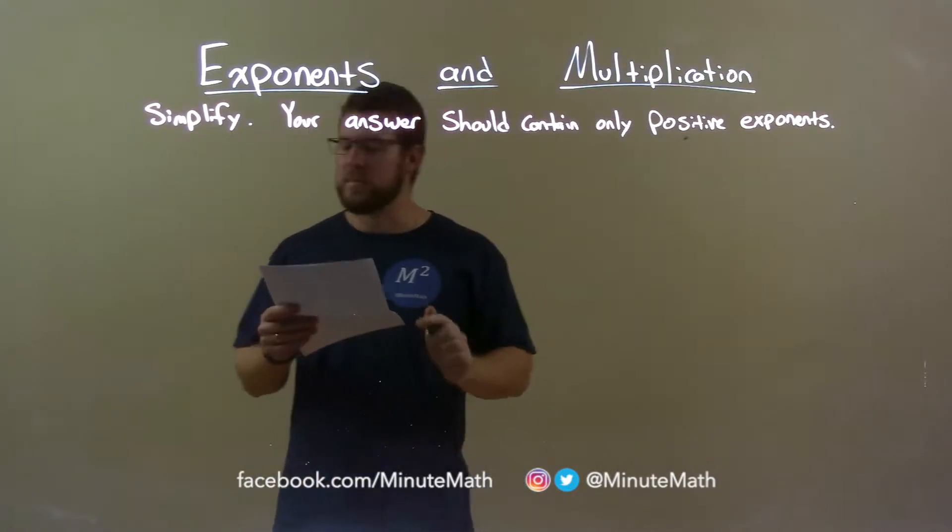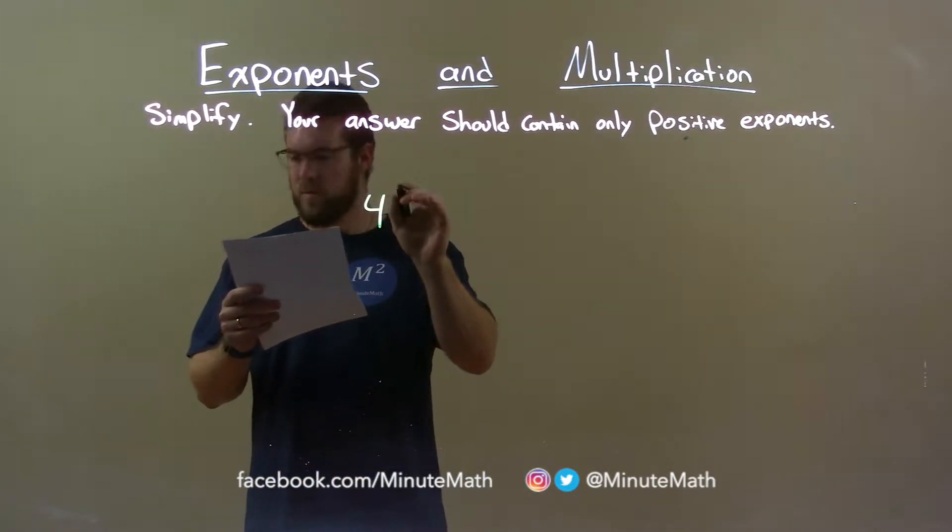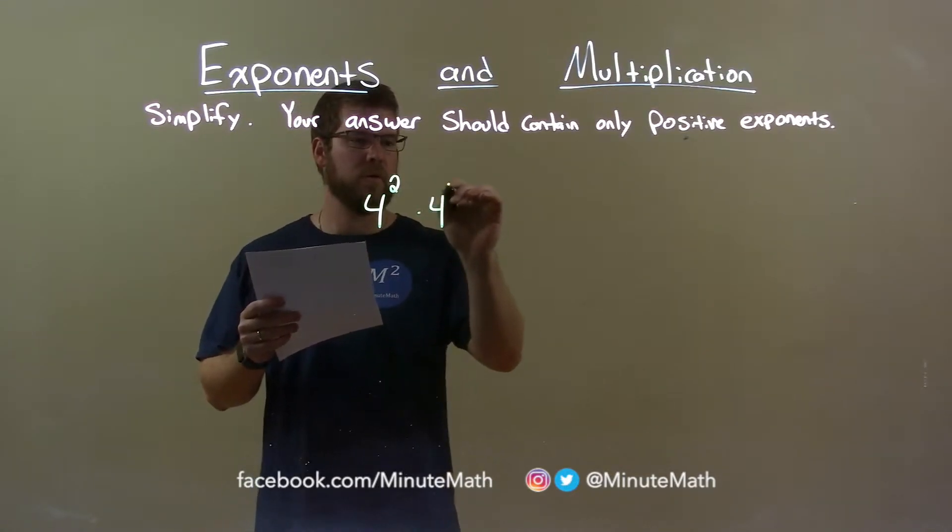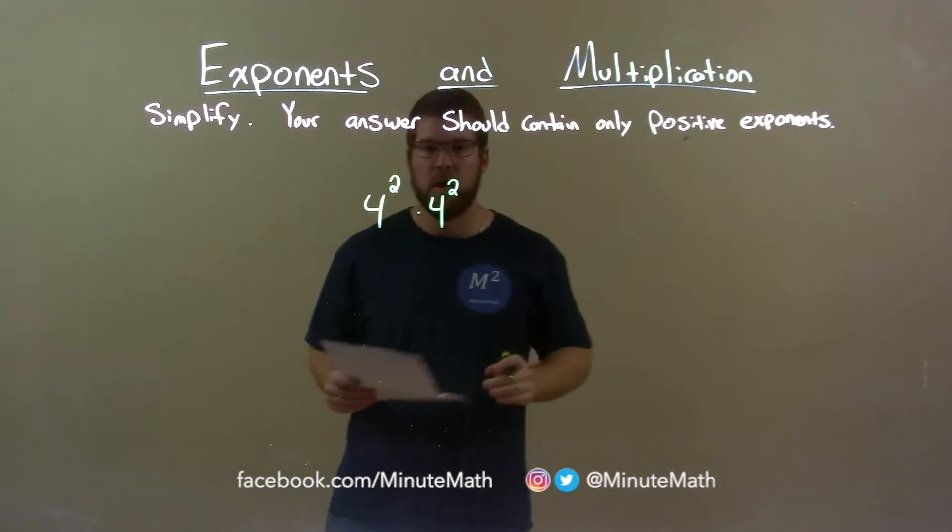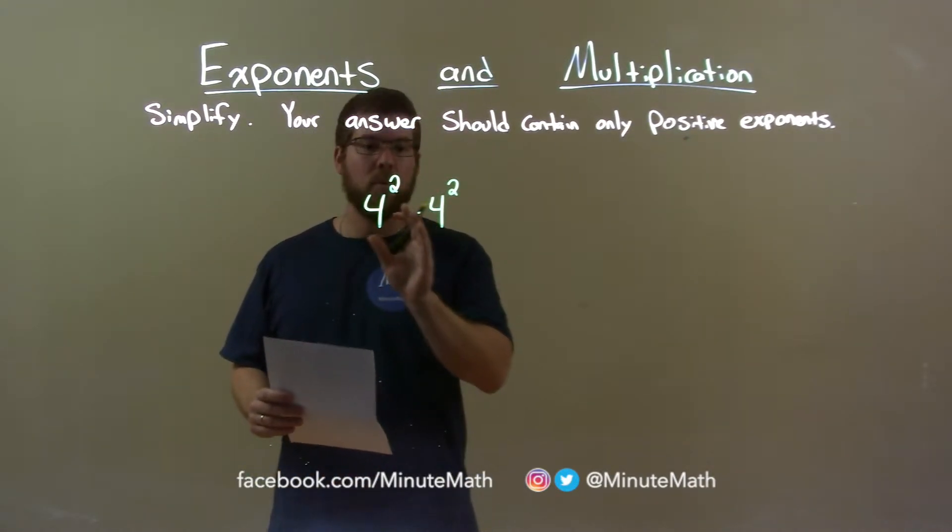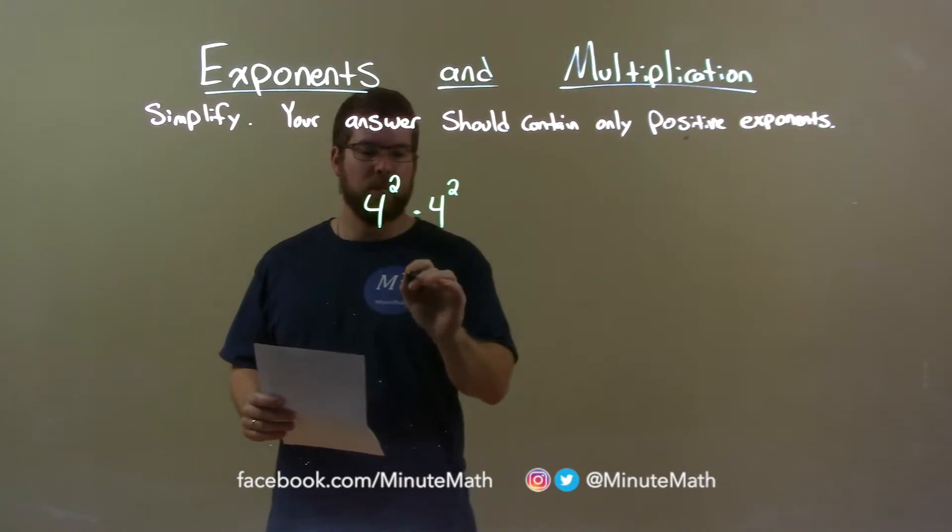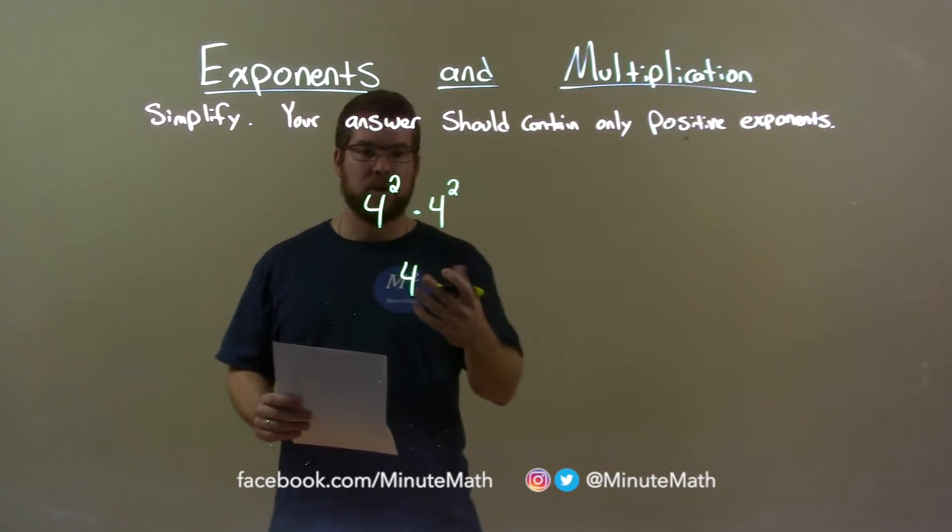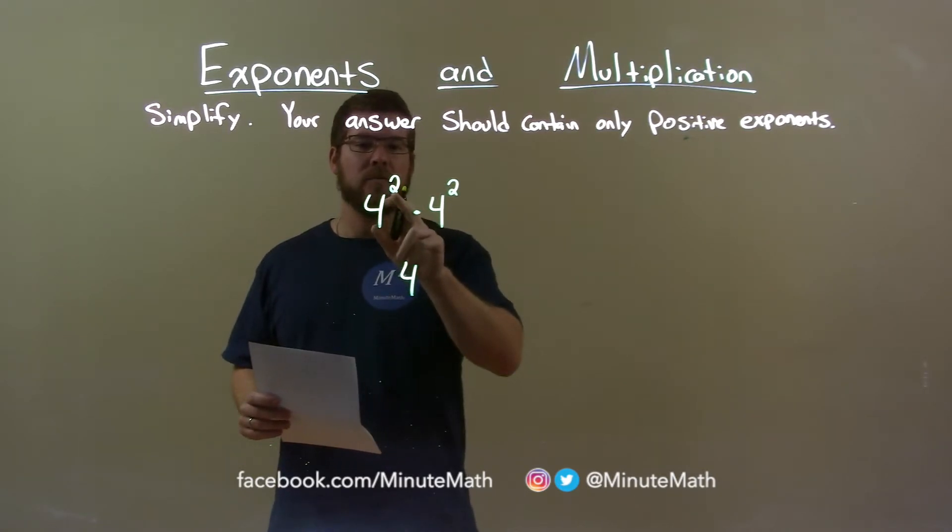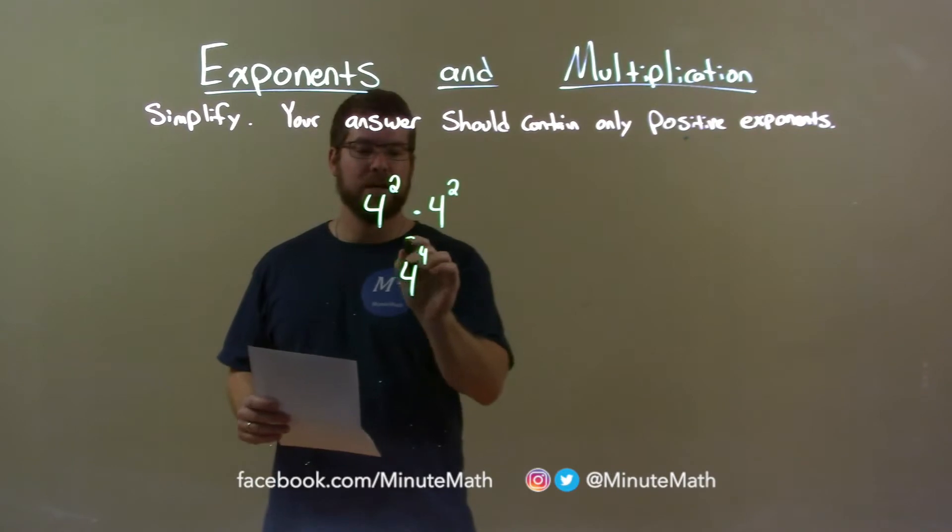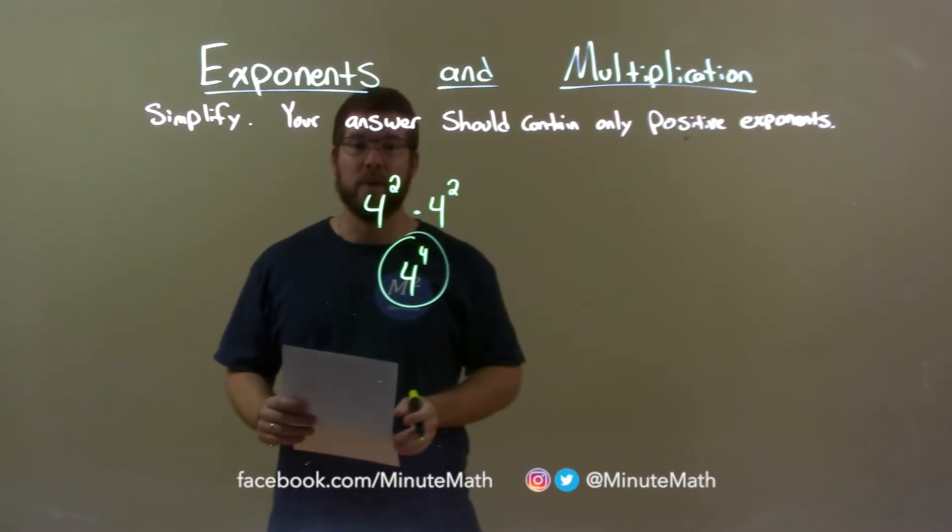So if I was given this problem, 4 squared times 4 squared. Well, we have the same base, which is 4. So when we multiply that together, our base stays the same and we add the exponents with multiplication there. So 2 and 2 add to be 4, and so my final answer is just 4 to the 4th power.